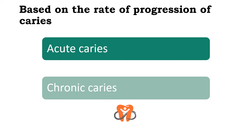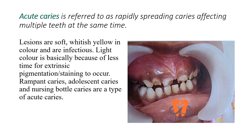Based on the rate of progression, we have acute caries and chronic caries. Acute caries is rapidly spreading caries affecting multiple teeth at the same time. The lesions are soft and whitish-yellow in color due to less time for extrinsic pigmentation or staining. Examples of acute caries include rampant caries, adolescent caries, and nursing bottle caries. The lesions are soft and light colored because there has not been enough time for them to harden or accumulate staining.